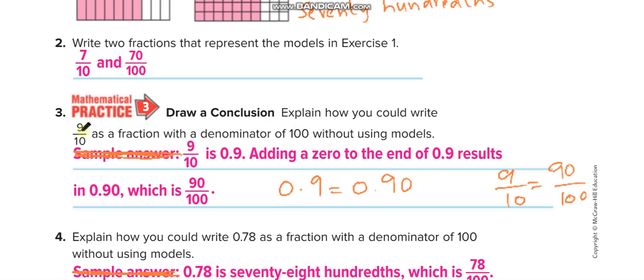Explain how you could write 9 over 10 as a fraction with a denominator of 100. If you want to change the denominator into 100, you multiply by 10 down. And when we multiply something down, we must multiply the same number up. You remember the rule of equivalent fractions, so it will become 90 over 100.